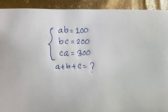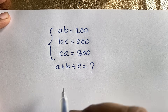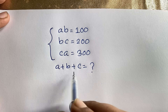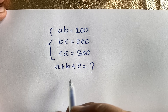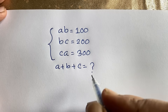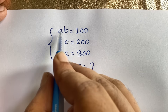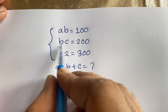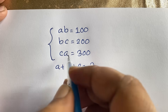How to solve this question? First of all, if I want to find out the value of A plus B plus C, we need to know the value of A, B, and C. So first of all, I will multiply this equation and this equation and divide by this equation.